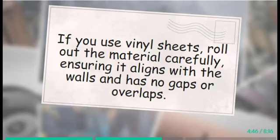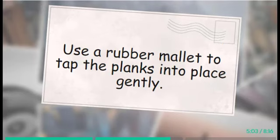Step 5: Install the Vinyl Flooring. Begin laying the vinyl flooring from one corner of the room and work your way across. If you use vinyl sheets, roll out the material carefully, ensuring it aligns with the walls and has no gaps or overlaps. For vinyl planks, simply click them together, starting from one end of the room and progressing row by row. Use a rubber mallet to tap the planks into place gently.